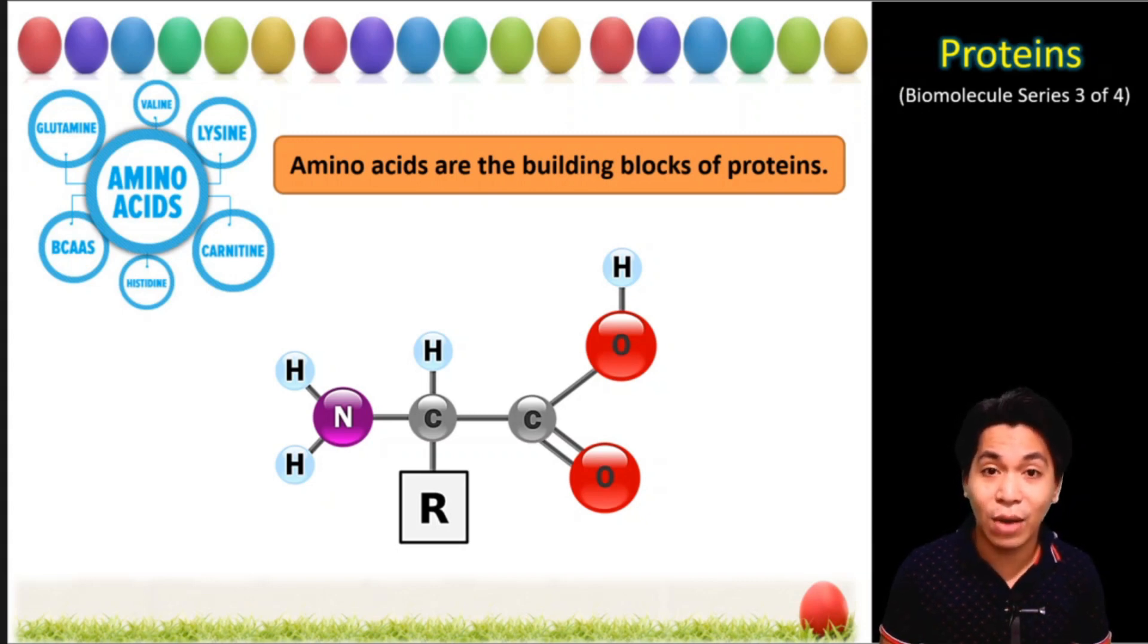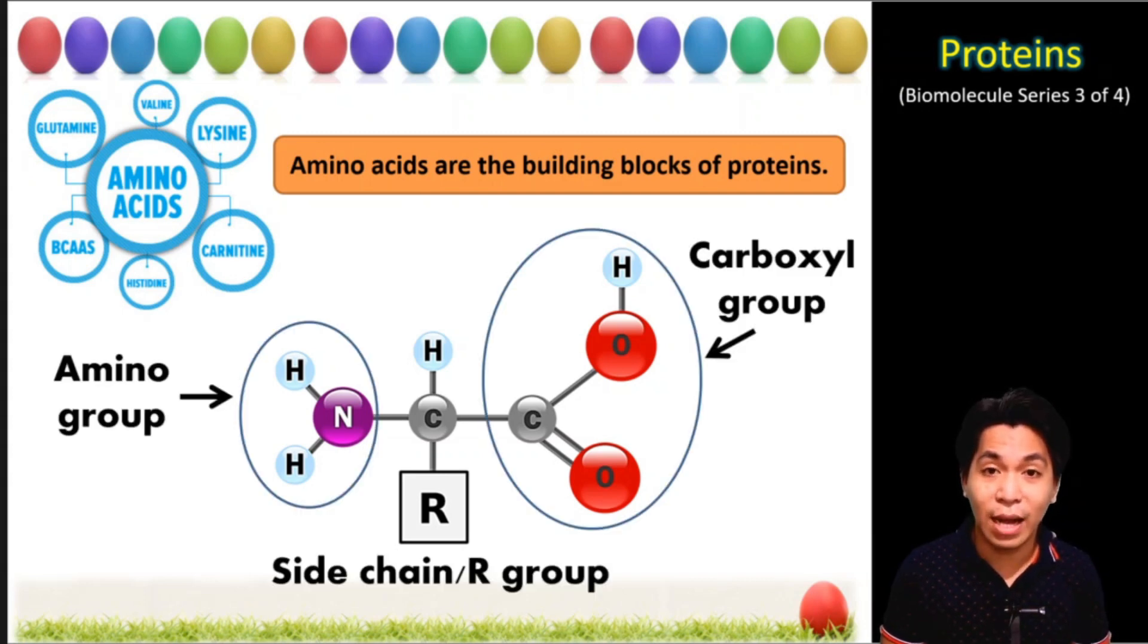We call them the amino acids. Amino acids are the monomers of proteins. And here is the structure of an amino acid. An amino acid is composed of three main parts which are all connected by a central carbon. One of the side is called the amino group which contains the nitrogen atom.